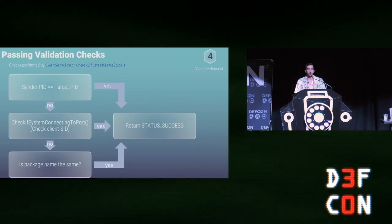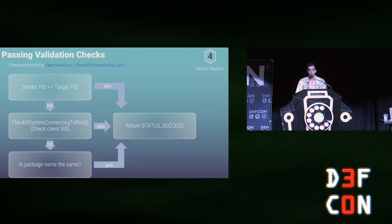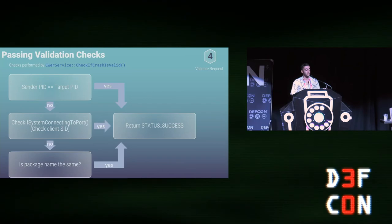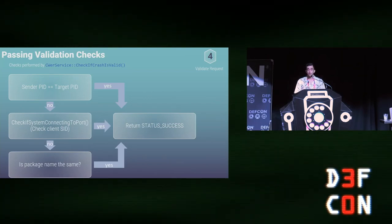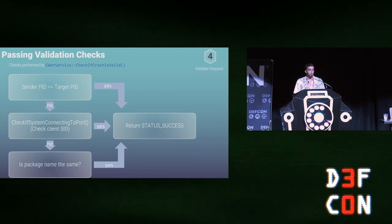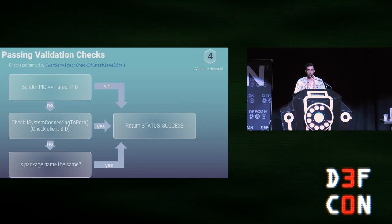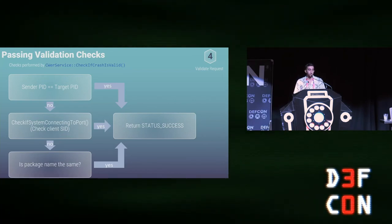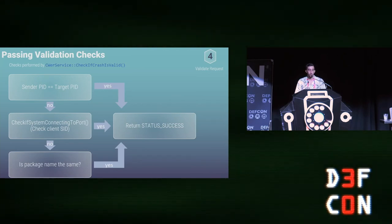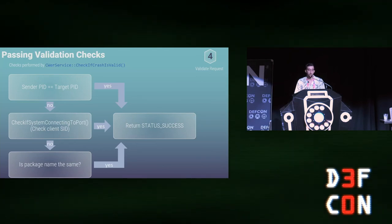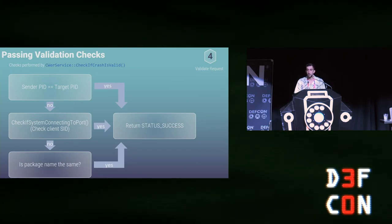Now we understand what this event is. Let's look at the validation checks performed by the service. The first check compares the PID of the process that sent the request to the PID of the process being reported on. In our first example we reported on ourselves, so those two values were the same. But now we're trying to report on LSASS — the sender PID is set by the kernel and we have no control over it, so those values differ and this check fails. The second check is performed by CheckIfSystemConnectingToPort, which checks the client's security ID. Initially that check failed, but eventually we were able to pass it. The third check compares the package names of the two processes, which is related to Windows apps — I won't go into much detail on that.